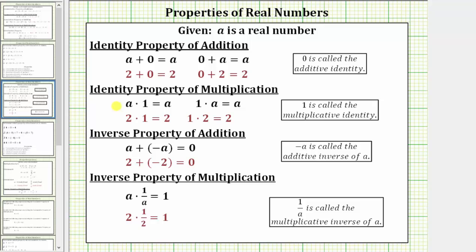The identity property of multiplication is given as a times one equals a, or one times a equals a. When we have a product involving one, we are using the identity property of multiplication, and we say one is the multiplicative identity.